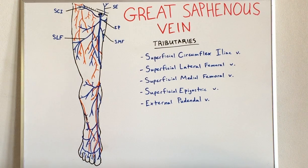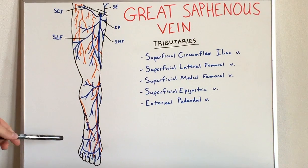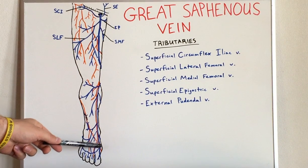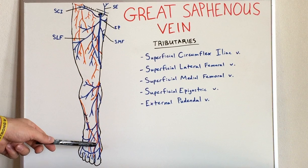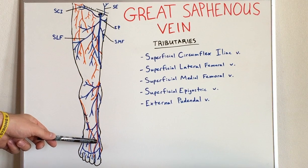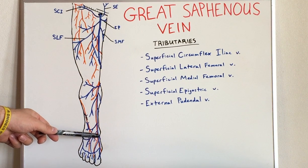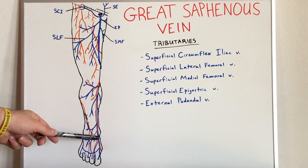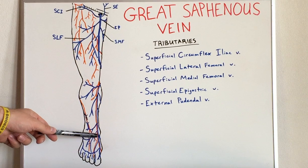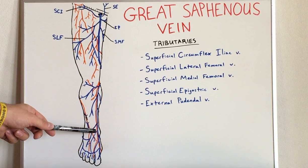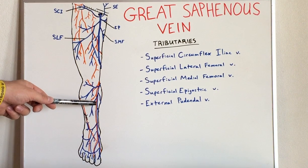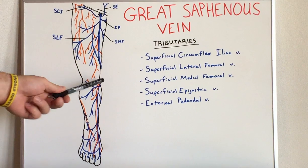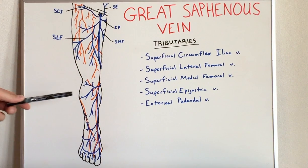The Great Saphenous Vein begins its course here on the dorsum of the foot at the dorsal venous arch, and begins by moving superficially and up. It crosses anterior to the medial malleolus and continues up the length of the leg, then passes behind the popliteal area.